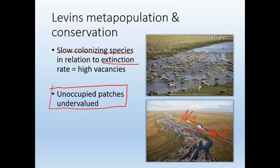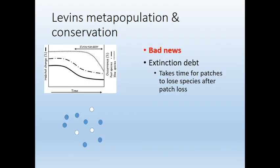Given this population model, those empty patches are extremely important. If you get rid of those empty patches, you're going to be hurting the species that could have gotten there at a later date. This is particularly bad when we think about something called extinction debt.